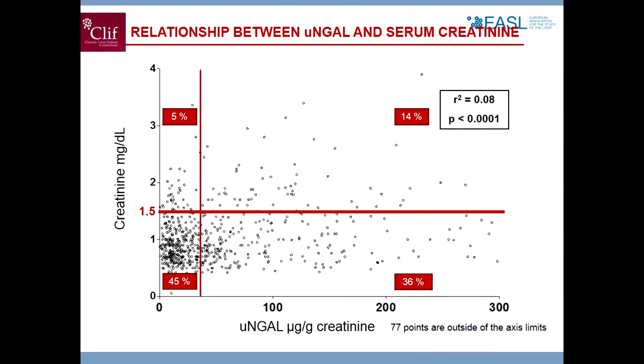Interestingly and unexpectedly, there was a significant correlation between urinary NGAL levels and serum creatinine. But importantly, more than one-third of patients had increased NGAL in their urine without signs of renal failure. So possibly NGAL is coming from other tissues — evidence suggests it comes from activated leukocytes, and inflammation and sepsis are very important in prognosis of patients with advanced cirrhosis. There is also initial evidence it may come from the liver itself.